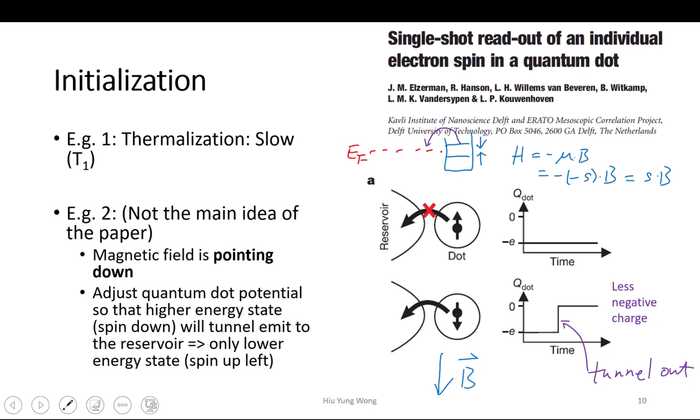The one with higher energy state will get out — that is considered the initialization. All the excited states get out, then only those at the lower state, at the ground state, will stay. Then you can initialize them. You might think that once it tunnels out you have nothing, but because you don't have the lower state filled, this one is going to fill it back — but it can only fill the lower state if you do it right.